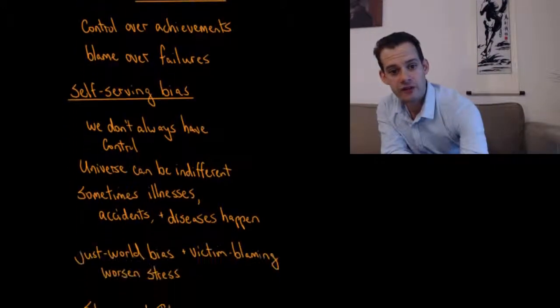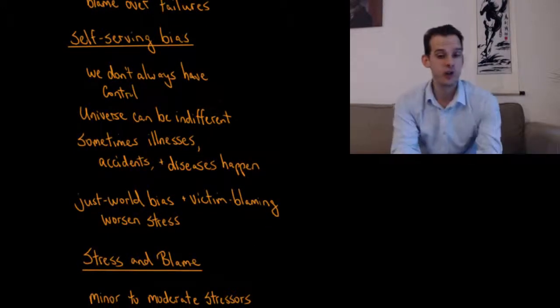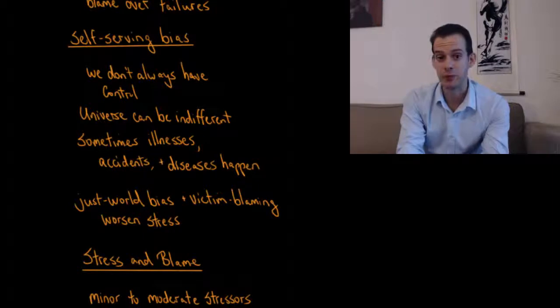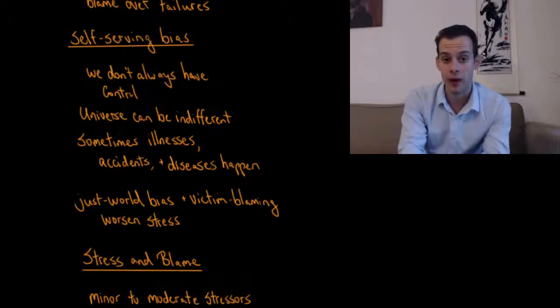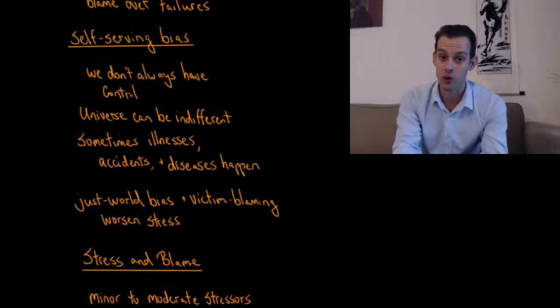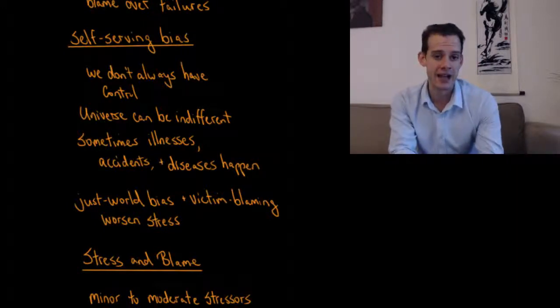And this is referred to as a self-serving bias, and many of us actually show this to some degree. We have a tendency to accept responsibility when things go our way and when we achieve what we want, and to blame others or blame circumstances when things don't go our way. And it's useful for reminding us when we don't actually have control.